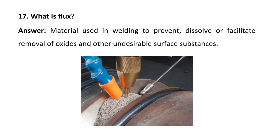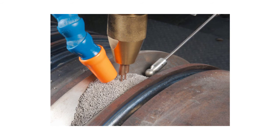Next question: what is flux? Flux is a material used in welding to prevent, dissolve, or facilitate removal of oxides and other undesirable surface substances. In submerged arc welding, flux is in the form of granules. During welding, the metal melts and if it comes into contact with the environment, oxides can form which make the joint brittle. Flux is used to protect the molten metal from atmospheric oxygen.